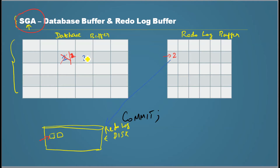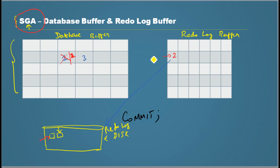So that's the overview of how data gets written. Data gets read into the database buffer, and when a process modifies the data it is modified in the database buffer. The meta information goes to the redo log buffer. When a commit happens, the redo log buffer gets written to the redo log file on disk, but this data does not get written to the real data files yet. I'll come to that later — this method is used by Oracle to achieve maximum performance. Thank you for watching.